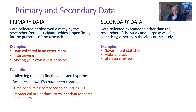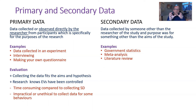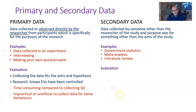Another form of secondary data is a literature review, like the Myers and Dina study on happiness. What they do is gather lots of different pieces of research and look at what they've said about happiness — they don't pull raw data together, they just take the conclusions from different studies and combine them. That's called a literature review. In all of these cases, the researcher themselves does not go and collect the data.